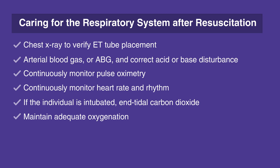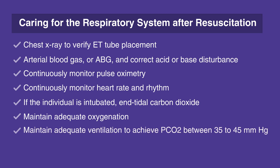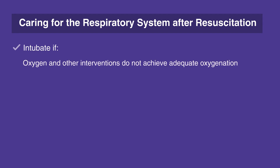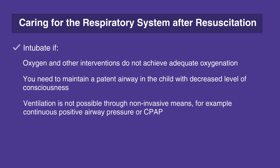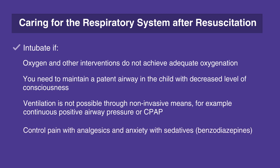Maintain adequate oxygenation — saturation between 94 and 99%. Maintain adequate ventilation to achieve PCO2 between 35 to 45 millimeters of mercury, unless otherwise indicated. Intubate if oxygen and other interventions do not achieve adequate oxygenation. You need to maintain a patent airway in a child with decreased level of consciousness, when ventilation is not possible through non-invasive means, for example, continuous positive airway pressure, or CPAP. Control pain with analgesics and anxiety with sedatives, for example, benzodiazepines.